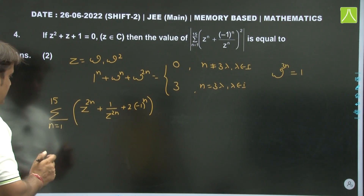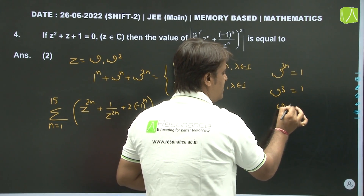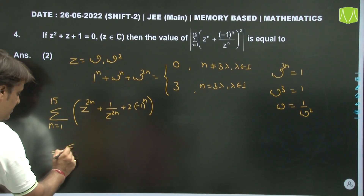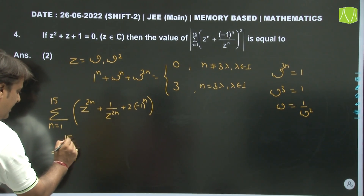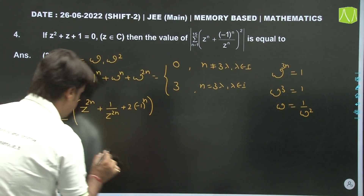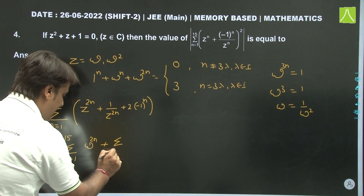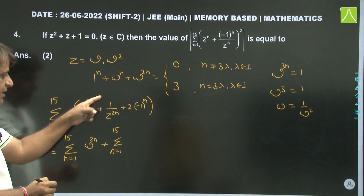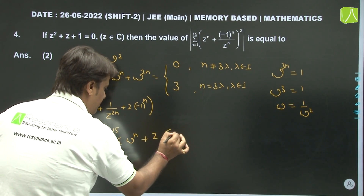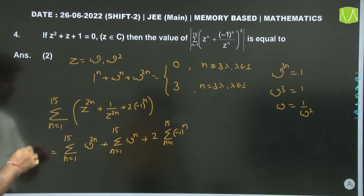Suppose z = ω. Then the result gives: summation of ω^(2n) + summation of ω^n from n=1 to 15, plus twice the summation of (-1)ⁿ from n=1 to 15. For the omega terms, grouping in sets of 3: each group gives 1 + ω + ω² = 0, giving 5 such combinations, so both summations equal 0.